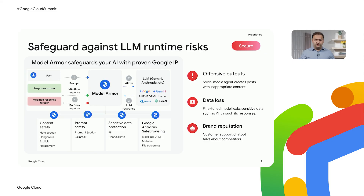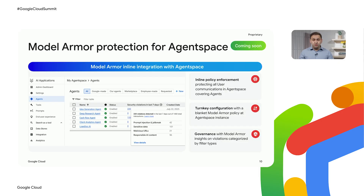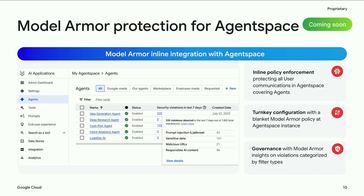Model Armor integrates in-line with Vertex, offers multiple deployment options for developers, AI and security teams, and supports a variety of LLMs from multiple popular vendors. We are super excited to announce the new Model Armor in-line integration with Agent Space, coming soon. Initially it will support in-line policy enforcement protecting all user-to-agent space communications. Agent Space admins can set a blanket Model Armor policy at the Agent Space instance level, and consistent filter settings will be applied to all prompts and responses in and out of that instance. Governance is provided via Model Armor insights highlighting violations categorized by filter types and their prevalence. This will be the industry's only such integration with Agent Space.